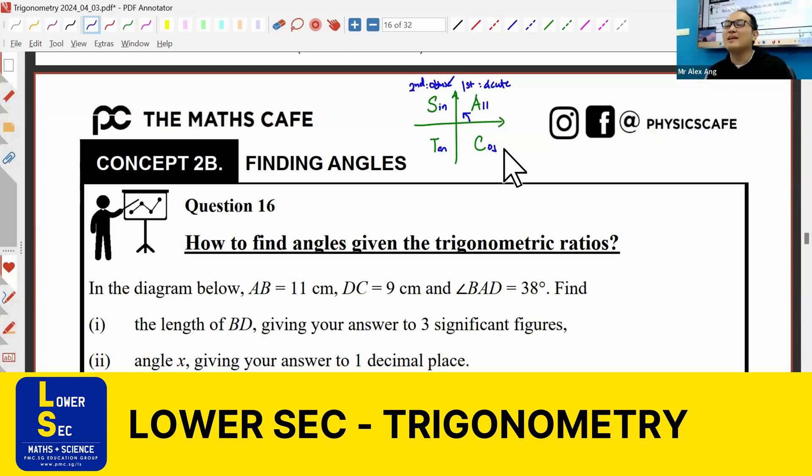Whichever letter is there means that the trig ratio is positive - that's how I remember it. So 'all' means all three trig ratios in this acute angle will definitely be positive.